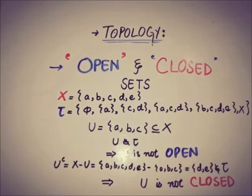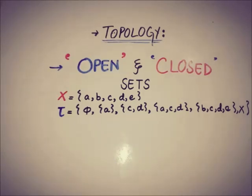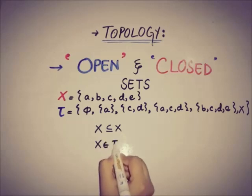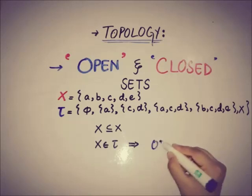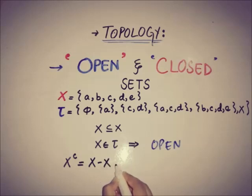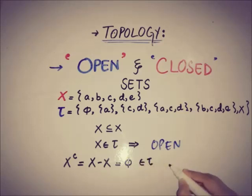So as you can see, the randomly picked subset of x, that is u, is not open and not closed. Now talking about the set x itself: since every set is a subset of itself, x belongs to the topology, which implies that x is an open set. Checking closeness, the complement is x minus x = the null set, and the null set is also a member of the topology. This implies that x is also a closed set.